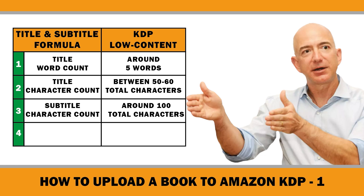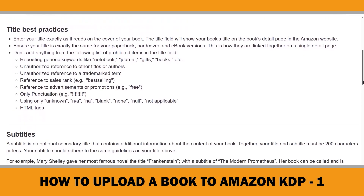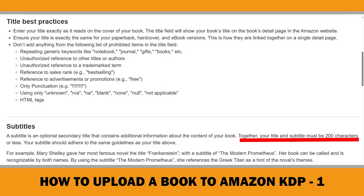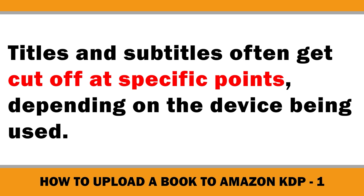For the title, aim for around 5 words with a total character count between 50 and 60. For the subtitle, keep it around 100 characters for low-content books to improve visibility on both mobile and desktop. Include the most relevant keywords within the first 80 characters. Although Amazon allows up to 200 characters, it's better to use fewer because not all characters will be visible on search engine results pages.